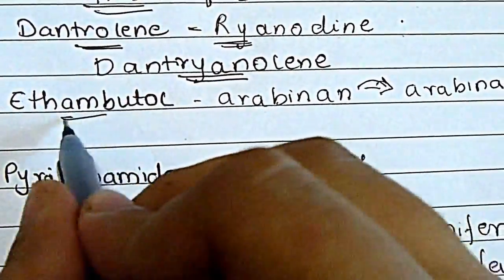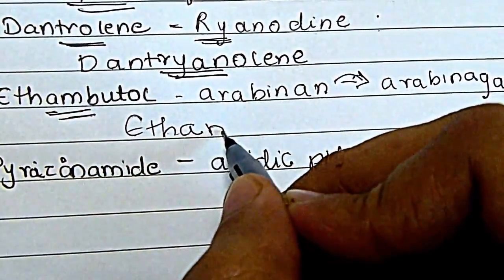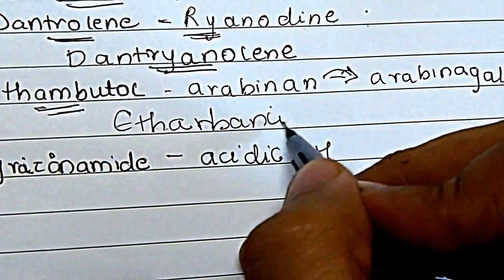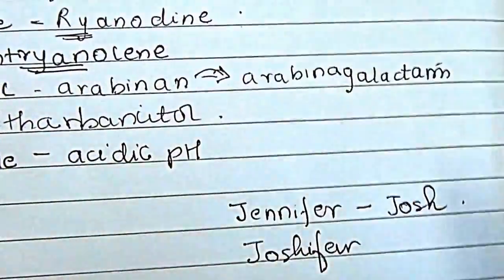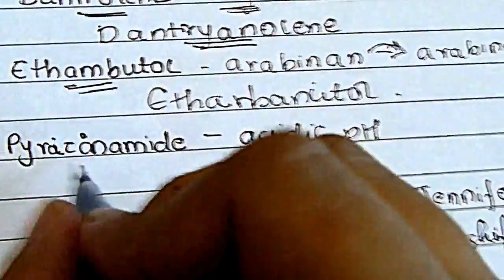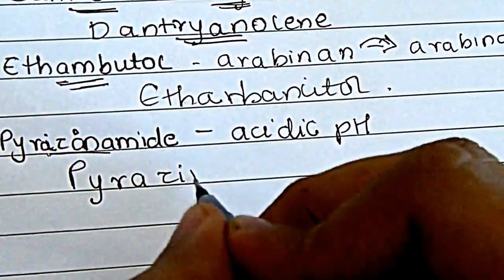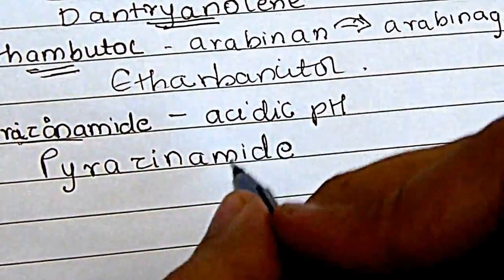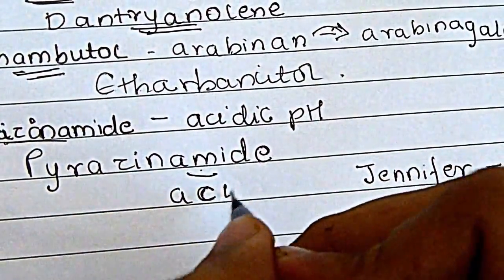For ethambutol, there's an 'arb' in there, so I call it 'Arbanbutol,' which helps me remember the conversion of arabinose to arabinogalactan. For pyrazinamide, I just flip one letter — the M into a C — and it spells 'acid,' which is how I remember it acts in the acidic pH.